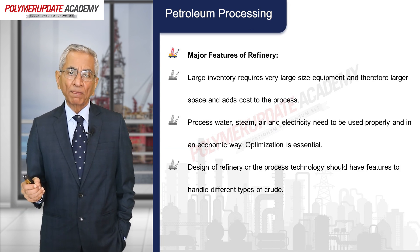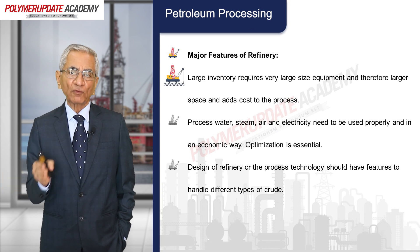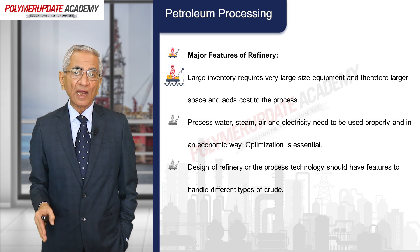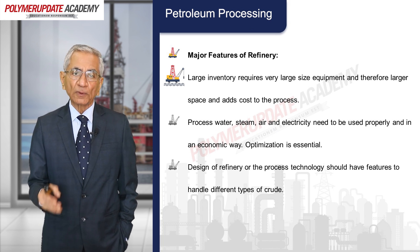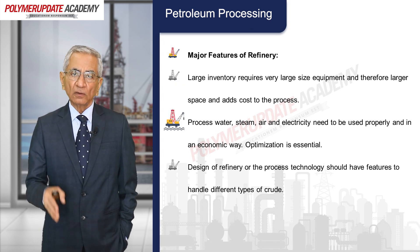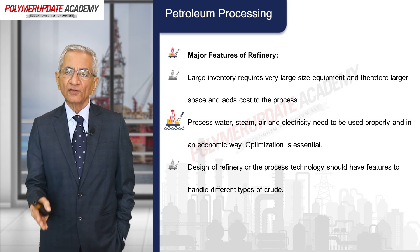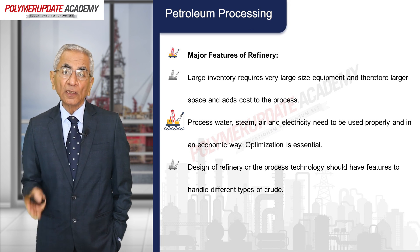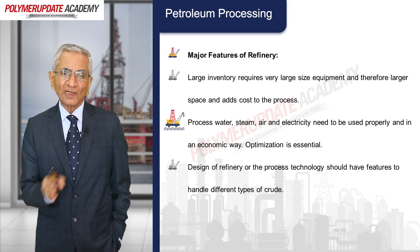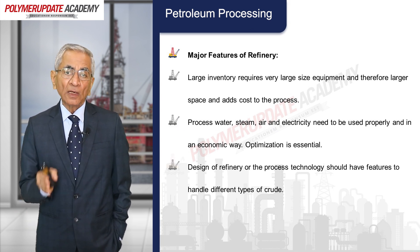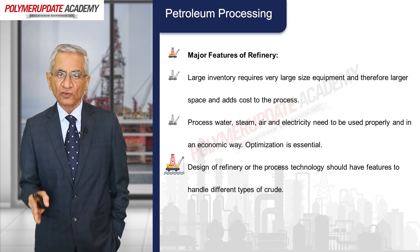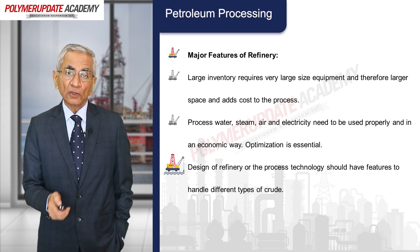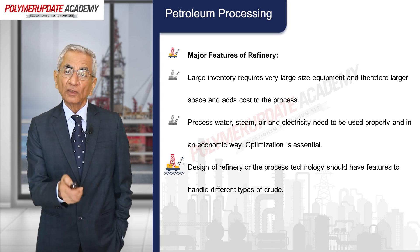Major features of a refinery include: very large inventory requiring large-size equipment and therefore larger space, adding to process cost. Process water, steam, air, and electricity need to be used optimally and economically. Optimization at every stage is essential. The refinery design should have features to handle different types of crude, not only one type, because crudes vary in their composition.